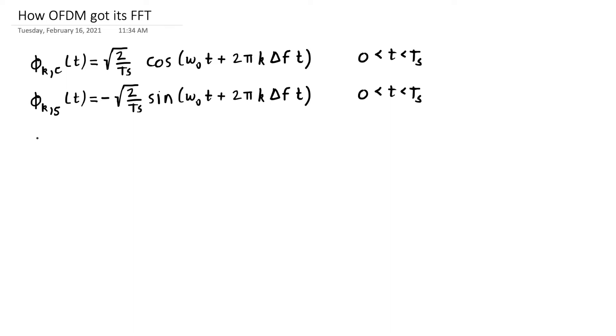These are defined between zero and T sub S and zero otherwise. So in the time domain, what happens when we modulate this with some kind of QAM symbol?